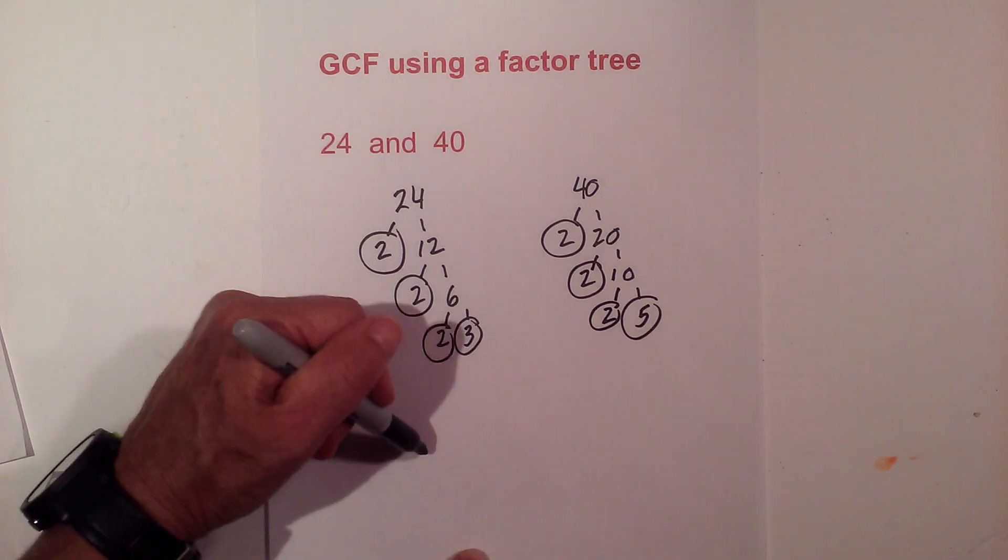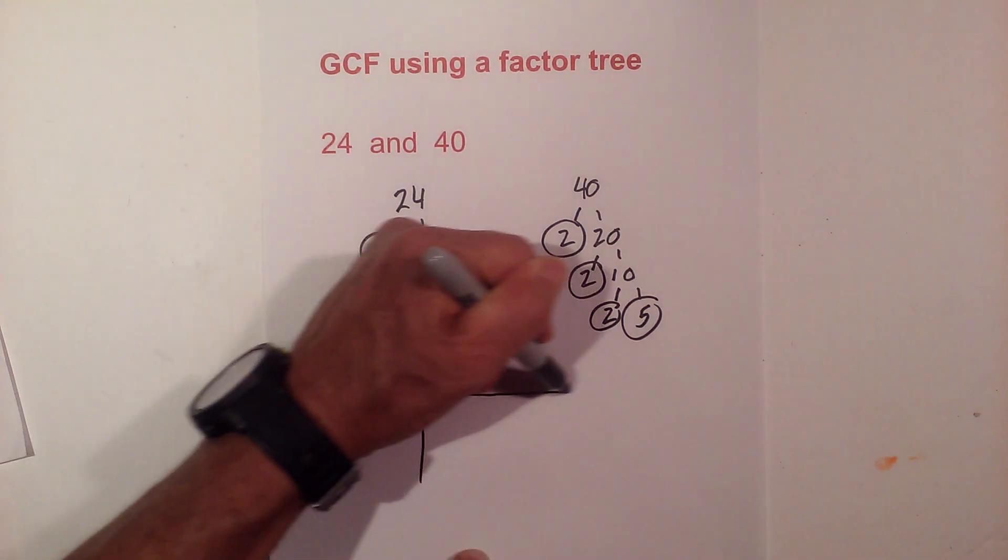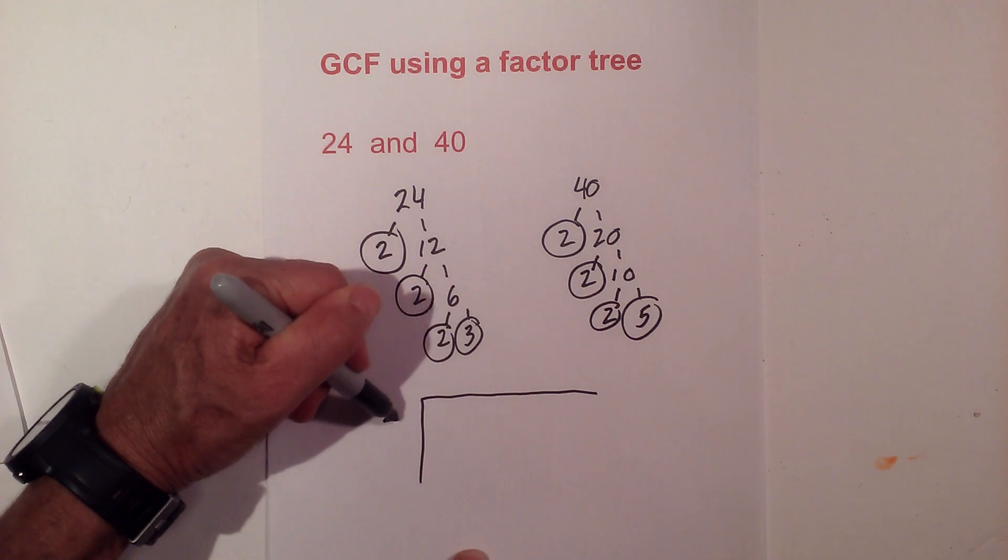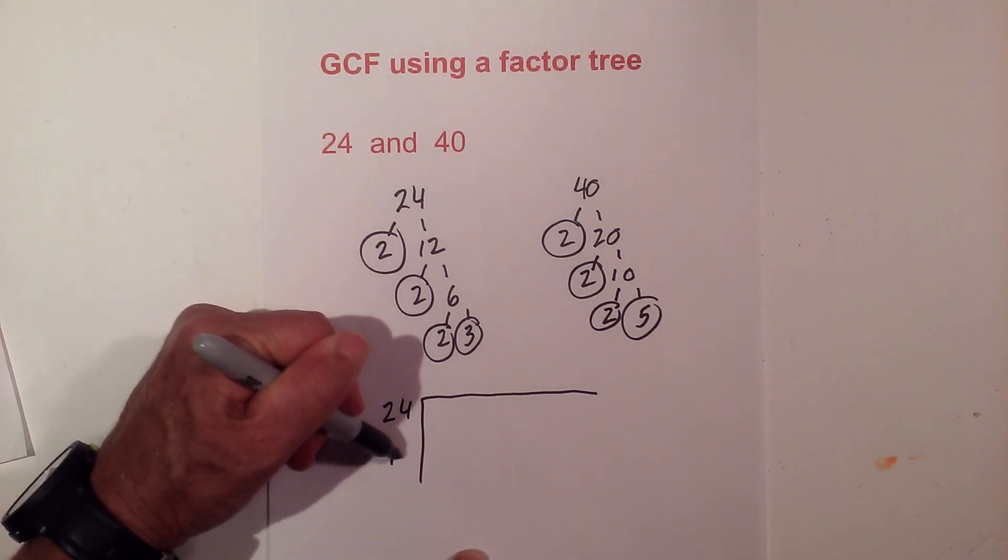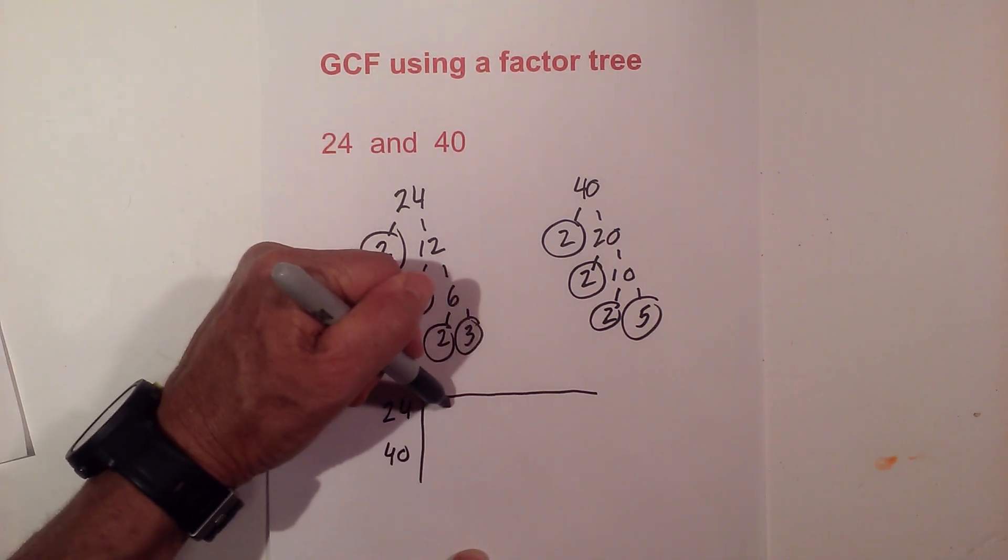Now I'm going to complete a factor chart to help cut down the number of errors, and I'll follow one simple rule: I'll write down the prime numbers.